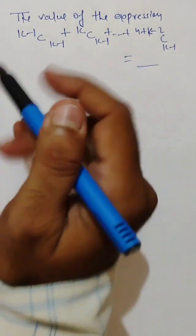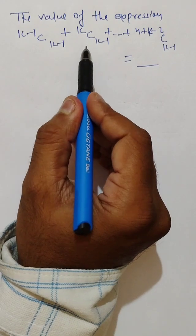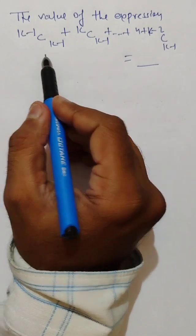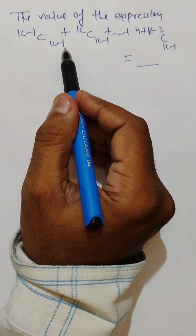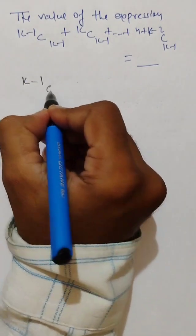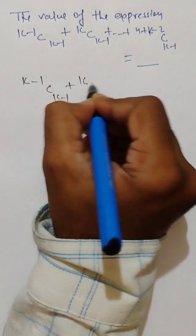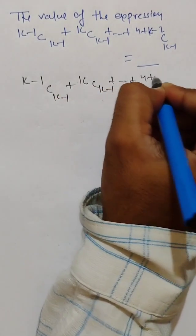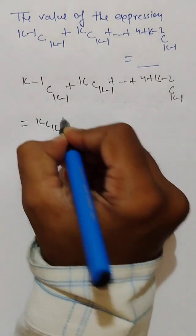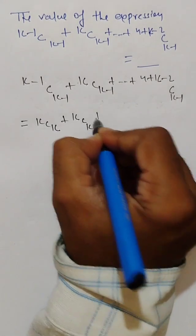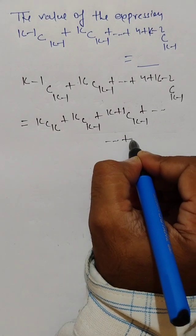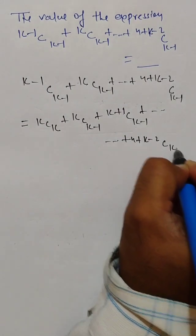In this problem, the value of the expression (k-1)C(k-1) + kC(k-1) + ... up to (n+k-2)C(k-1). Here we have to use the concept of combinations. So now we have (k-1)C(k-1) + kC(k-1) + ... up to (n+k-2)C(k-1). This will be equal to kC(k) + kC(k-1) + (k+1)C(k-1) + ... up to (n+k-2)C(k-1).